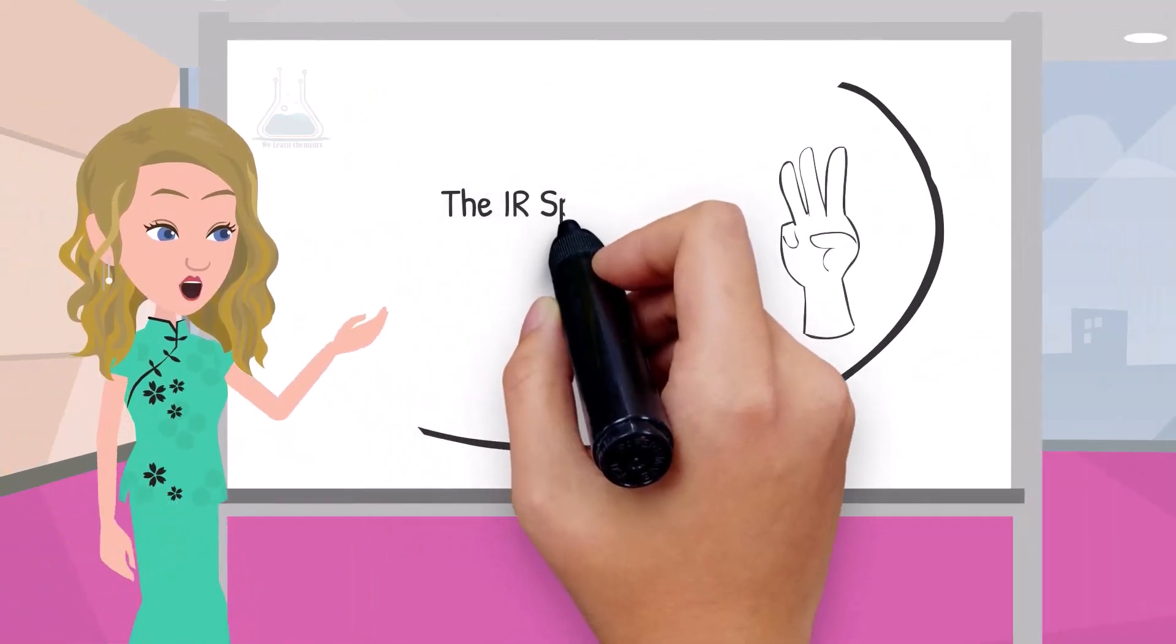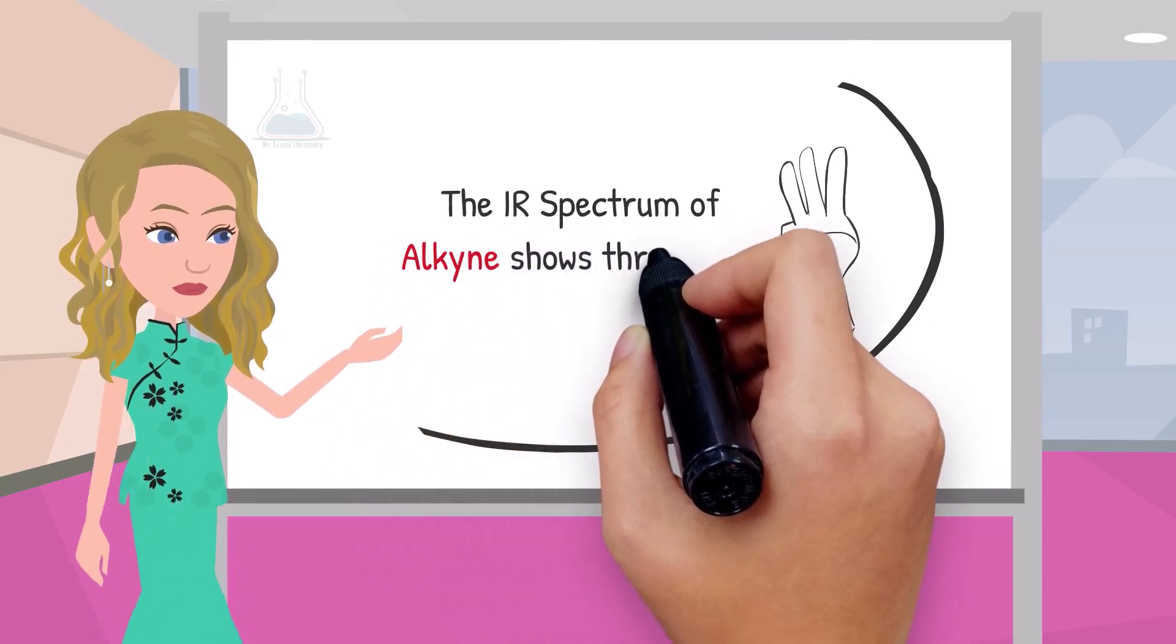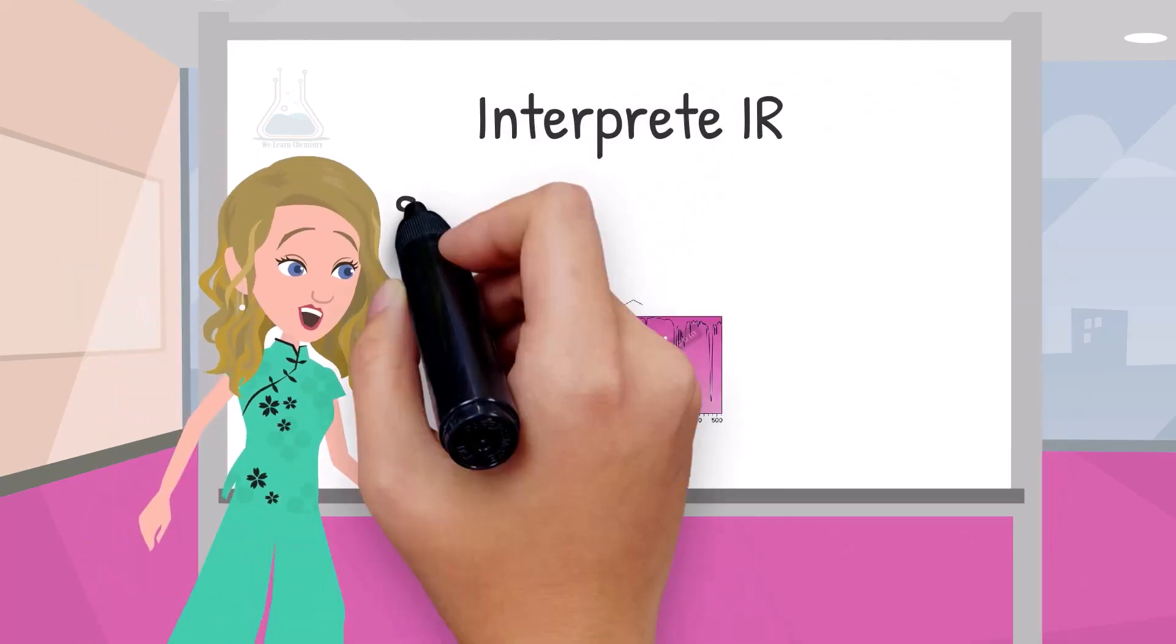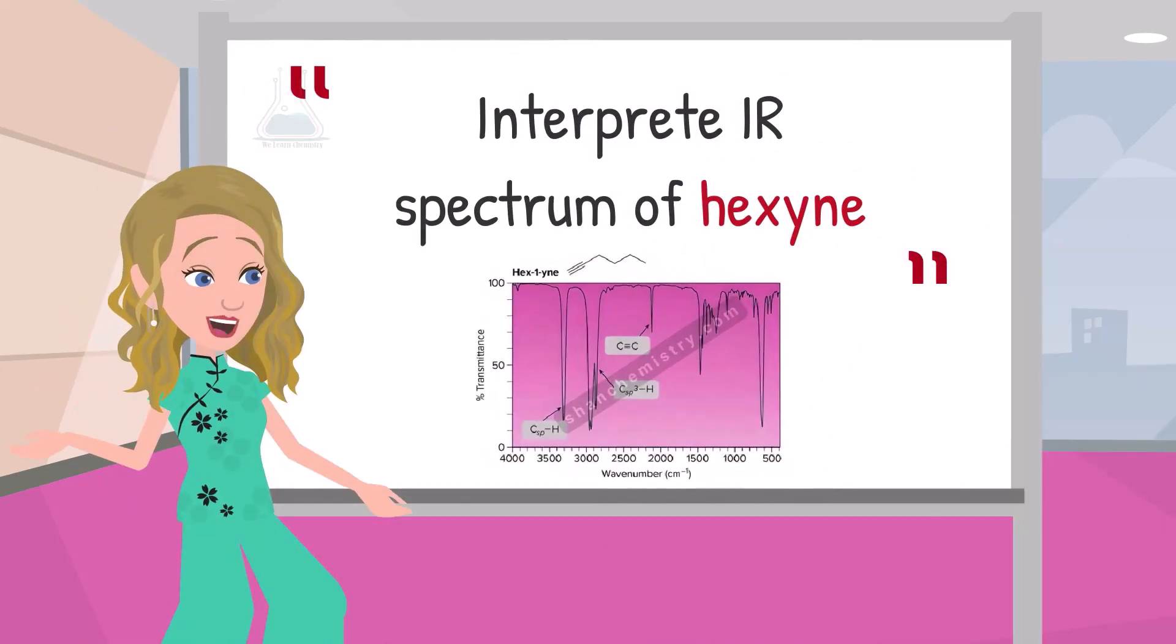The IR spectrum of alkyne shows three main absorptions. Let us interpret the IR spectrum of hexine, which is an alkyne.